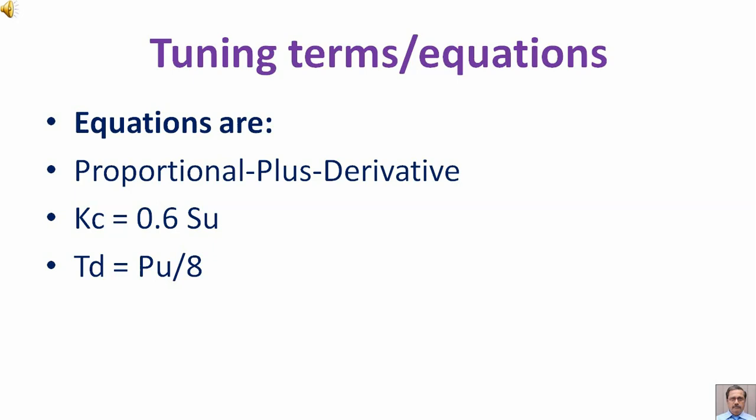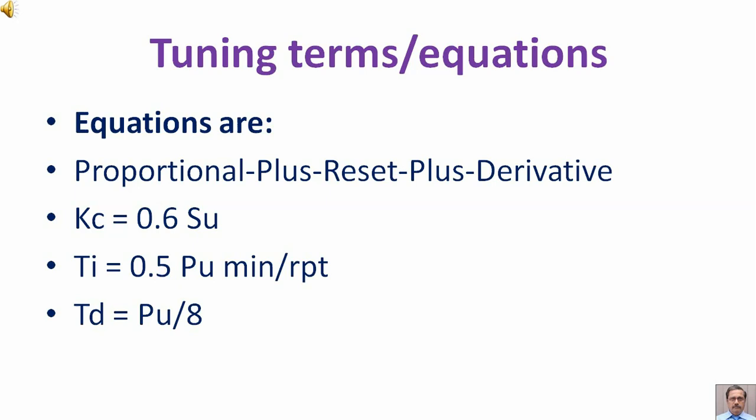For proportional plus reset plus derivative control action: K subscript C is equal to 0.6 S subscript U, T subscript I is equal to 0.5 P subscript U, T subscript D is equal to P subscript U divided by 8.